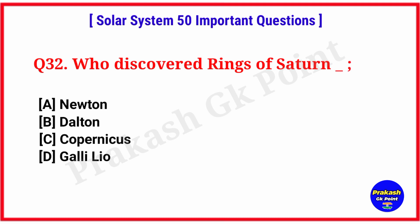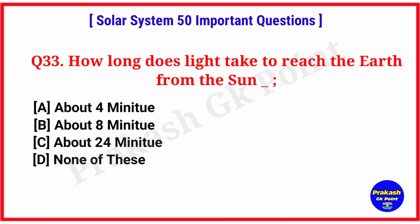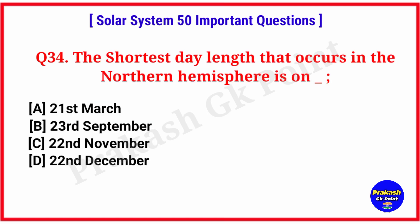Who discovered the rings of Saturn? Answer: option D, Galileo. How long does light take to reach the Earth from the sun? Answer: option B, about 8 minutes. The shortest day length that occurs in the northern hemisphere is on? Answer: option D, 22nd December.